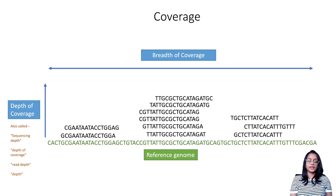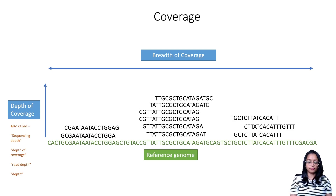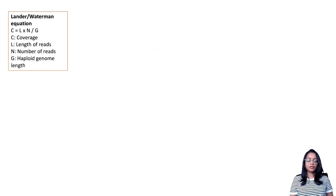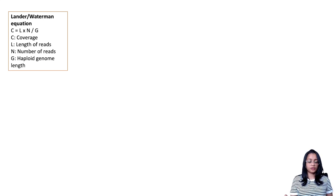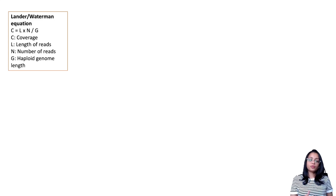It's important to note that depth of coverage is not always uniform — certain areas in a reference sequence have higher coverage than others, so a coverage value is usually an average. For example, if we say a genome has 10x coverage, we mean each base has been sequenced 10 times on average. Coverage can be calculated for the whole genome, for one locus, or for a single nucleotide position. At the single-nucleotide level, coverage represents the number of reads overlapping that position.